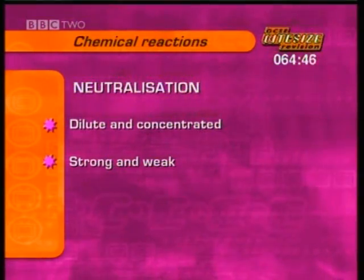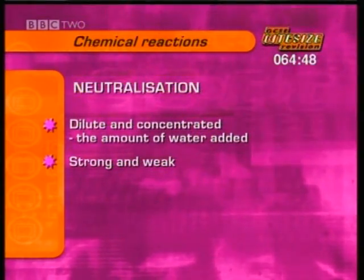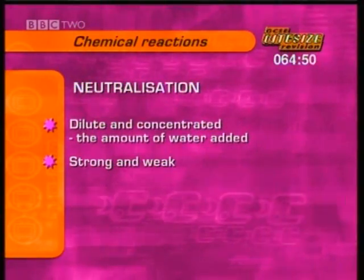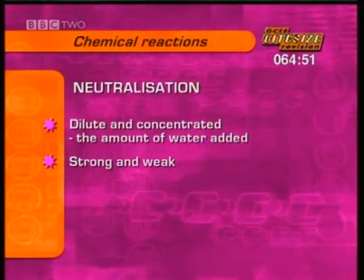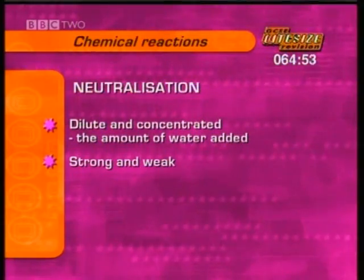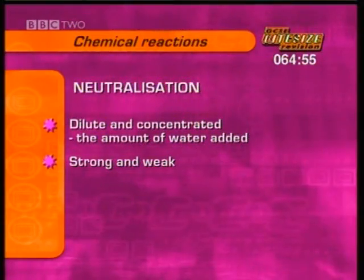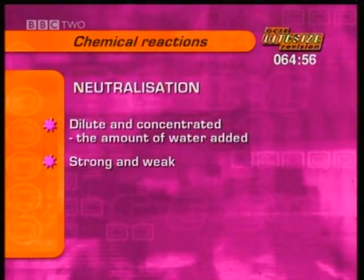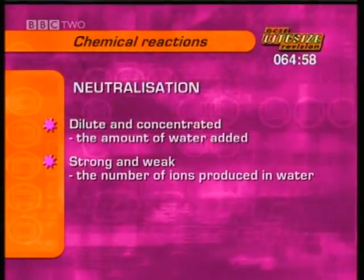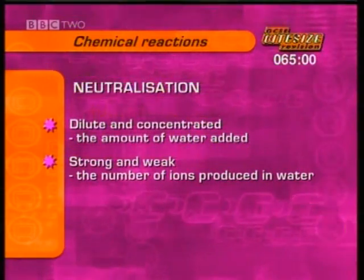Dilute and concentrated are measures of the amount of water added to the acid or alkali. The more water added, the more dilute it is, just like diluting orange squash. Strong and weak are measures of the number of ions produced in water.